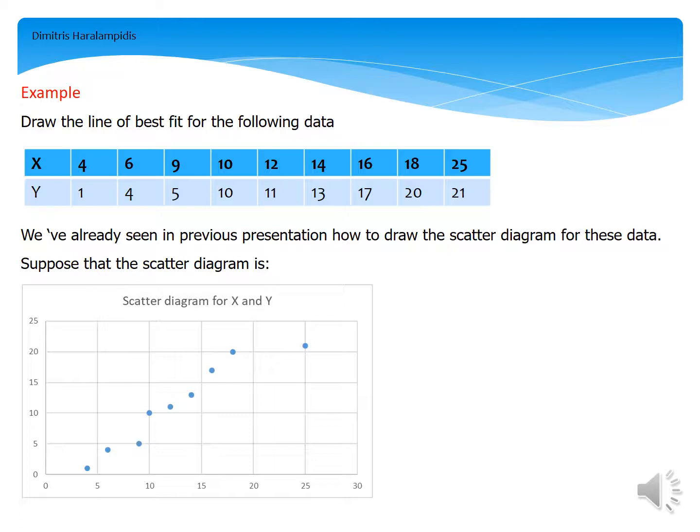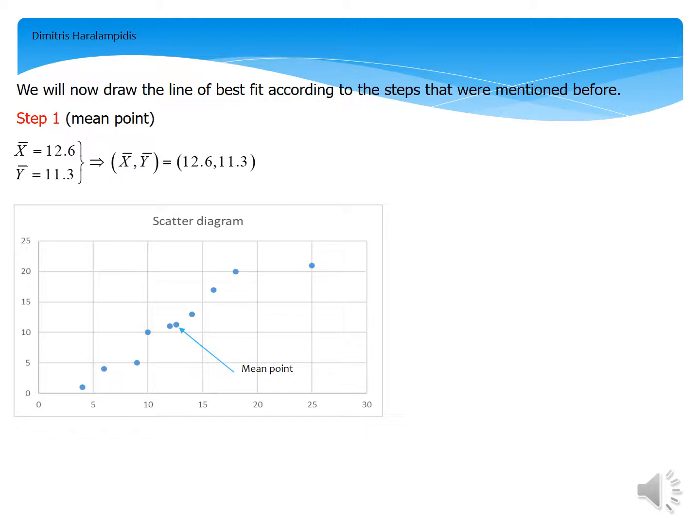And now, let's suppose that the scatter diagram for this data is the following. We will now draw the line of best fit according to the steps that were mentioned before.